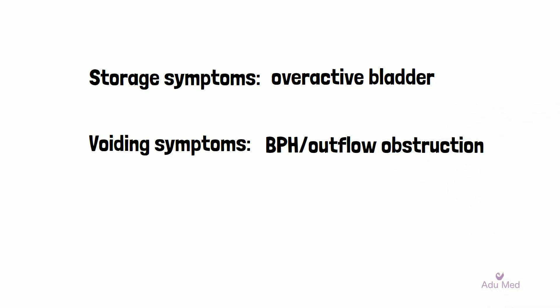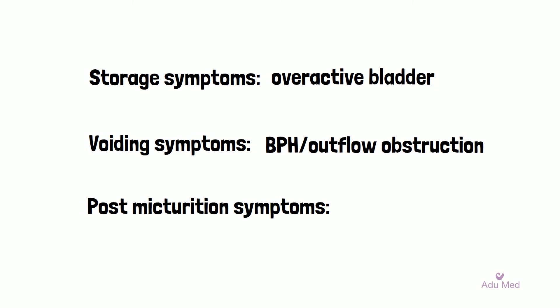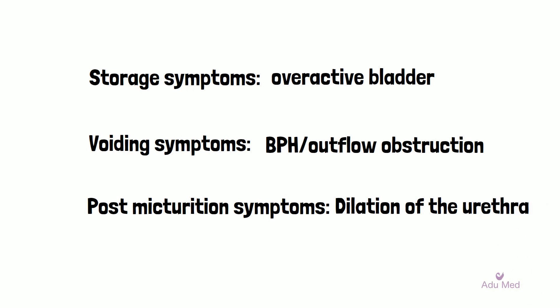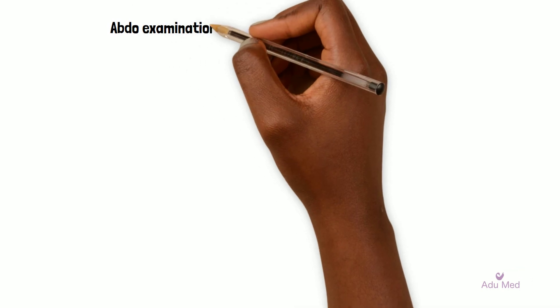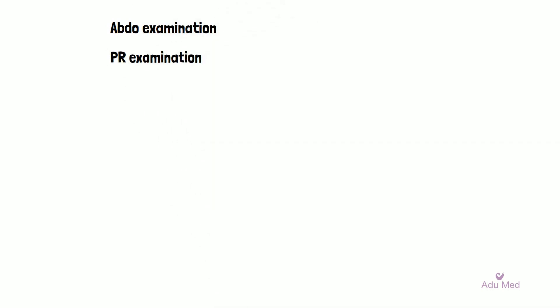Post-micturition symptoms such as terminal dribbling and feeling of incomplete emptying — the underlying cause of such symptoms is usually chronic retention due to dilation of the urethra. Assessing such patients will include examining the abdomen to look for bladder enlargement and a PR examination to also examine the prostate.